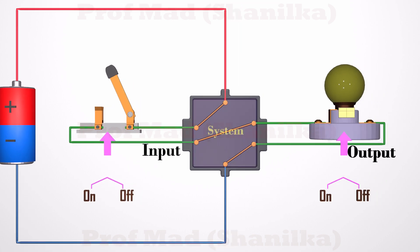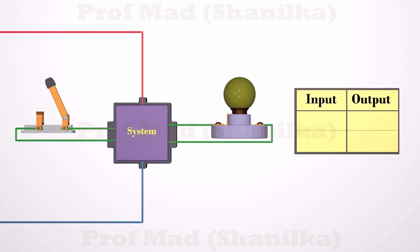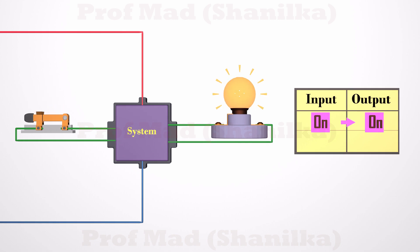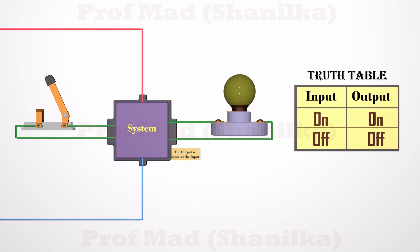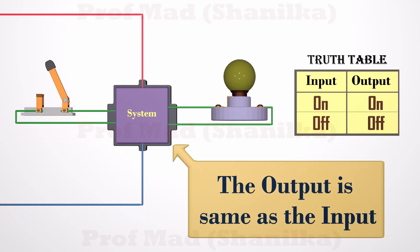Let's draw the state of the switch and the state of the light in a table. When we turn on the switch, the light bulb turns on. When we turn off the switch, the light bulb turns off. We call this the truth table of this system. Here we are getting the same output as the input — no changes.